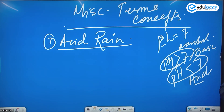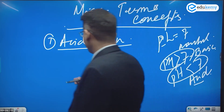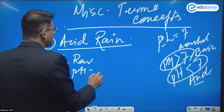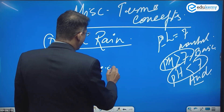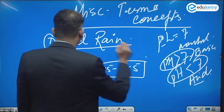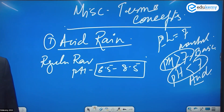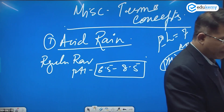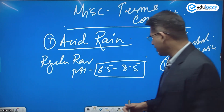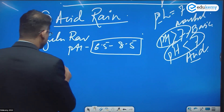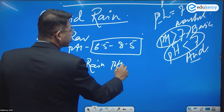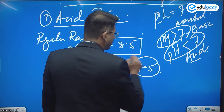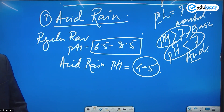The regular rain generally has a pH of about 6.5 to 8.5. But when there is acid rain, the pH falls — it is approximately 4 to 5. So that's pretty low — 4 to 5 — that's acidic rain.